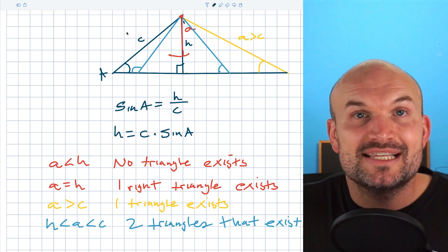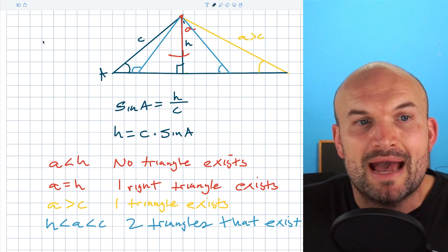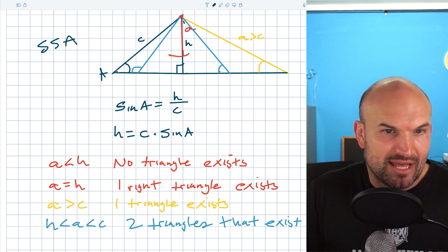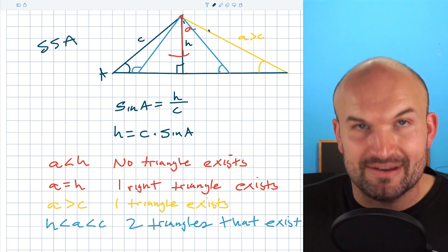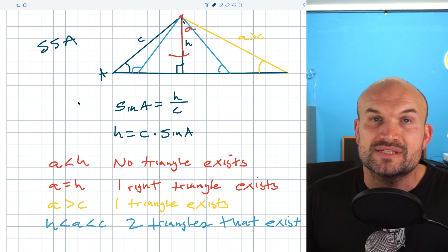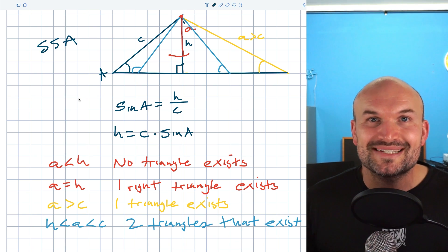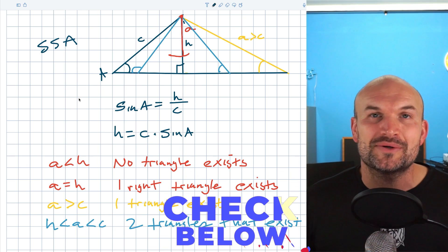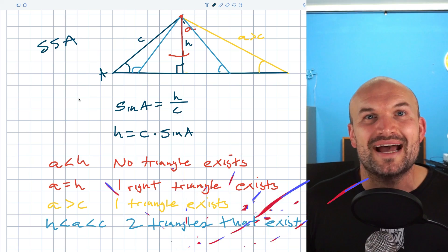Now, last thing I did forget to mention is this ambiguous case is only going to happen when we have a side side angle relationship, meaning we only have one angle and then two sides given. When we have angle angle side or angle side angle, we don't need to worry about the ambiguous case. Now, if this video is helpful for you, please consider subscribing or give me a super thanks. I have more examples in the playlist and resources down below or check out the next video I have for you here.